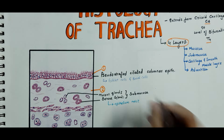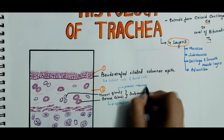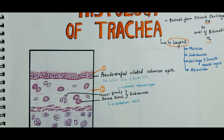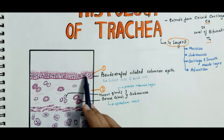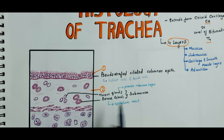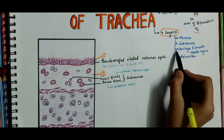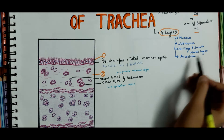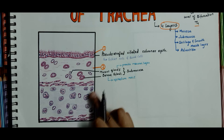The serous glands keep the epithelium moist, and the mucus glands provide a covering of mucus in which dust particles get caught. The mucus is continuously moved towards the larynx by the cilia action. The submucosa also contains blood vessels and ducts.